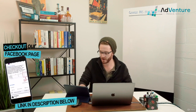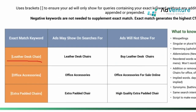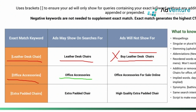Let's take a look at a couple of potential examples showing what ads will and will not show for. 'Leather desk chairs' in brackets will show for 'leather desk chairs.' 'Buy leather desk chairs' — even though that entire phrase is included, there's an extra word not in my keyword, so it will not show. 'Office accessories' in brackets will show for 'office accessories' but will not show for 'office accessories for sale online.'